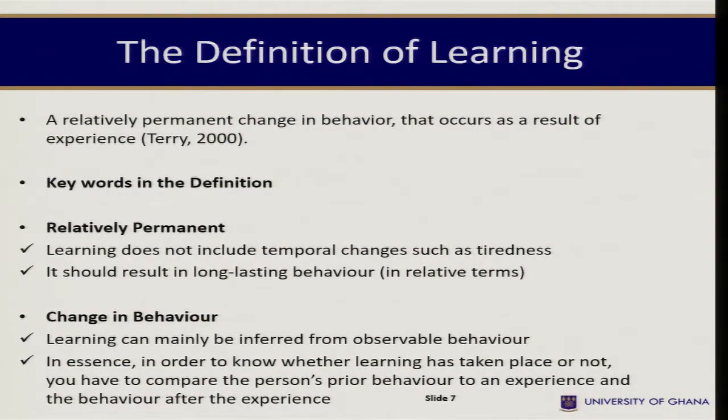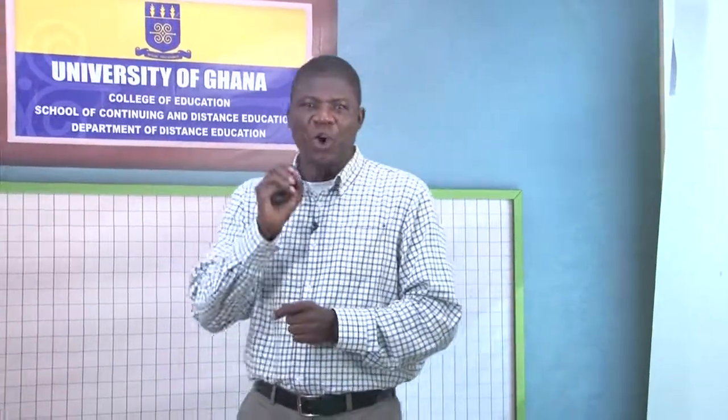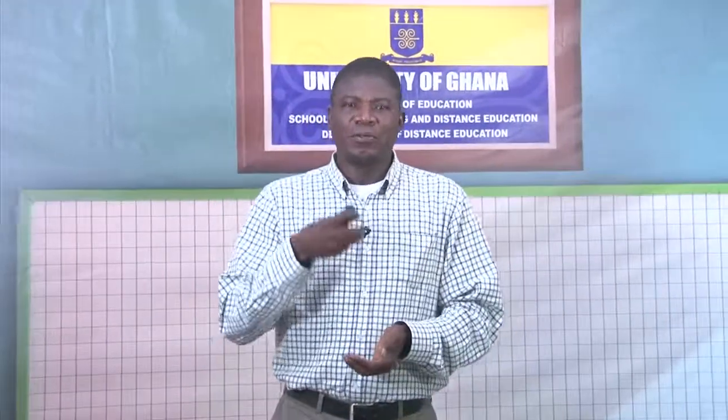Another key term is 'change in behavior.' Learning can mainly be inferred from observable behavior — behavior that can be observed. In essence, in order to know whether learning has taken place or not, you have to compare the behavior of the organism, person, or animal before the change and also after. That way you will be able to know whether there is a change in behavior and whether it is permanent or not.